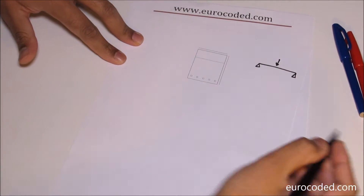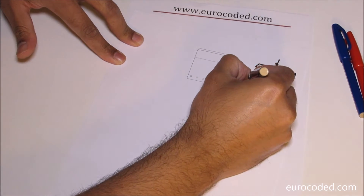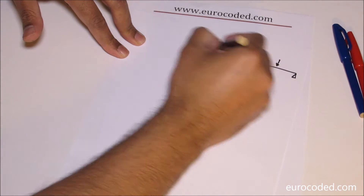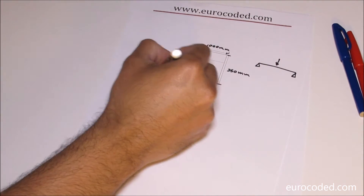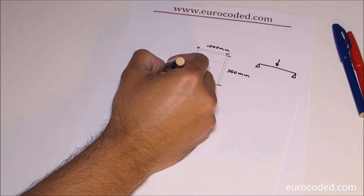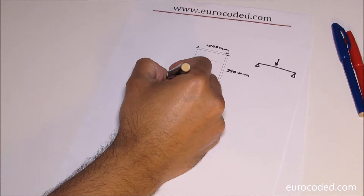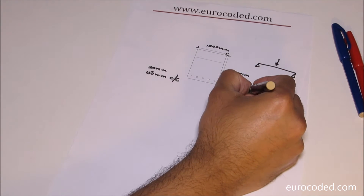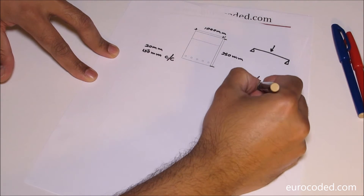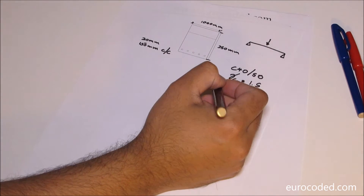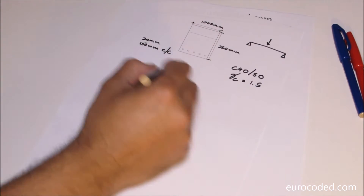For the example, we take a 250mm thick section, 1 metre wide, with 20mm diameter bars at 150mm centres at the bottom. The concrete is C40/50 and gamma_C is 1.5. There is an externally applied axial compression force of 100 kilonewtons.